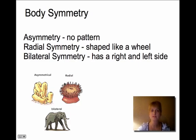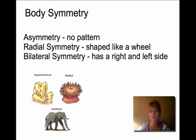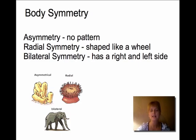Animals have different body plans. An animal can be asymmetrical, meaning there is no pattern — we see this a lot with sponges. Then there is radial symmetry, which is round or wheel-shaped — seen in anemones and starfish. Finally, most animals we think of have bilateral symmetry, meaning we can distinguish the right side from the left side.